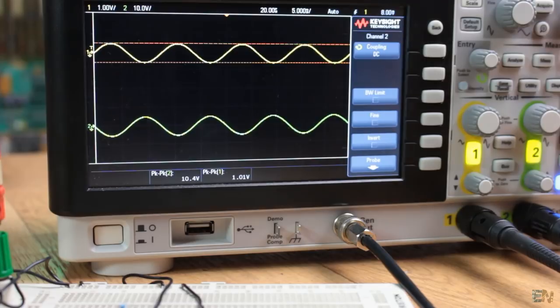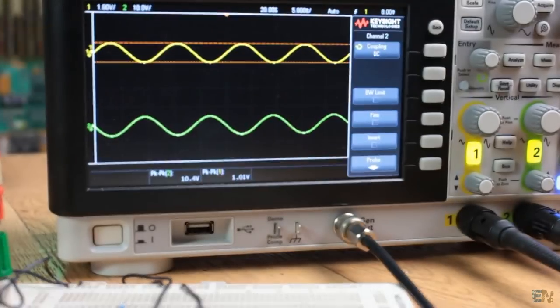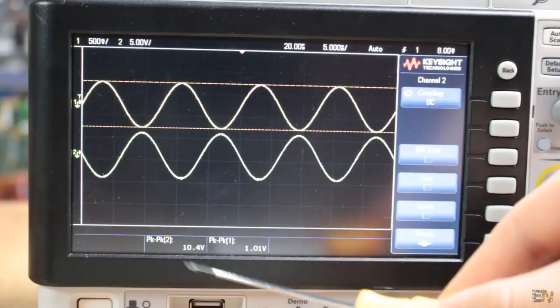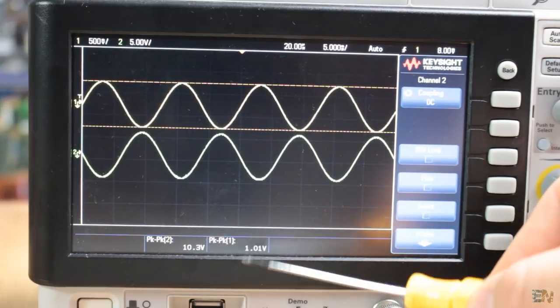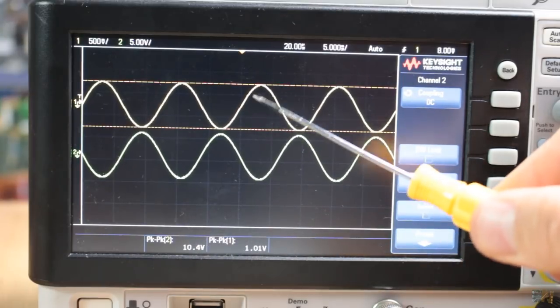Now on the oscilloscope, the yellow line is the input and the green is the output. As you can see, the output is 10 times bigger and also inverted. When the input is rising, the output is falling and vice versa.